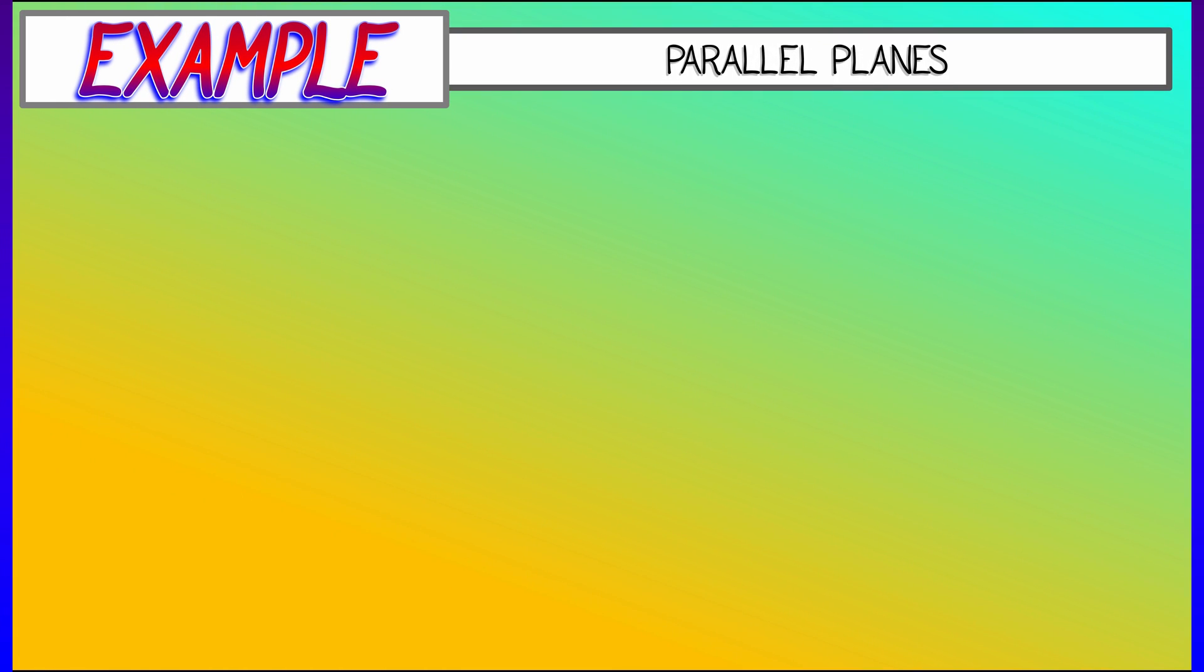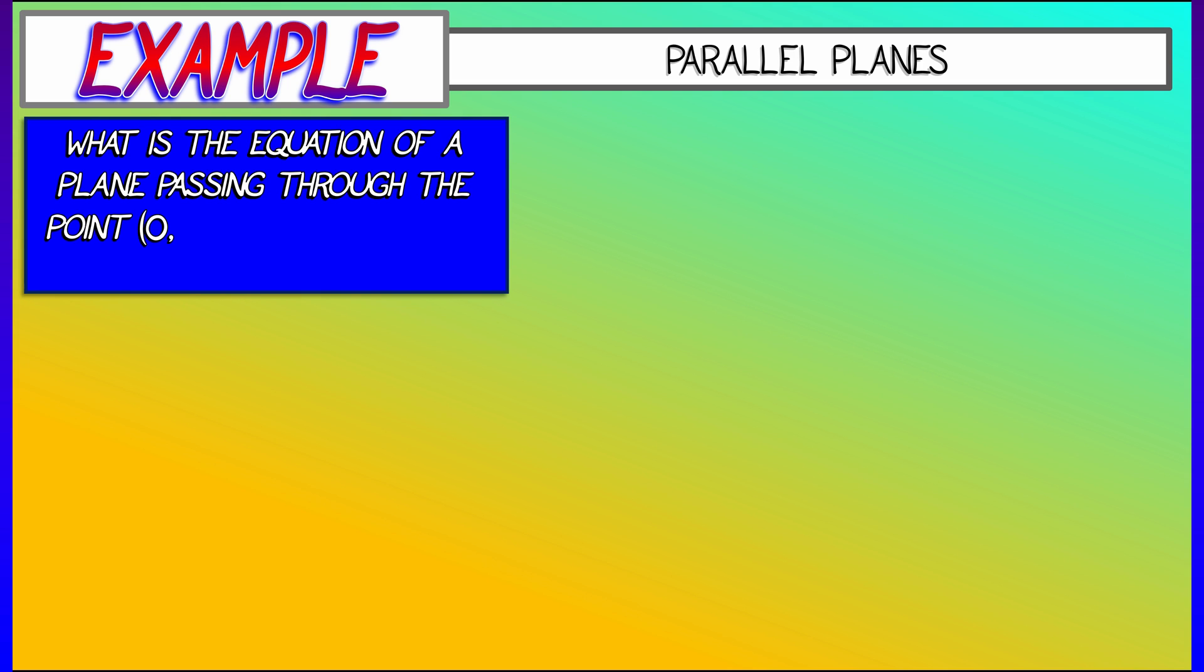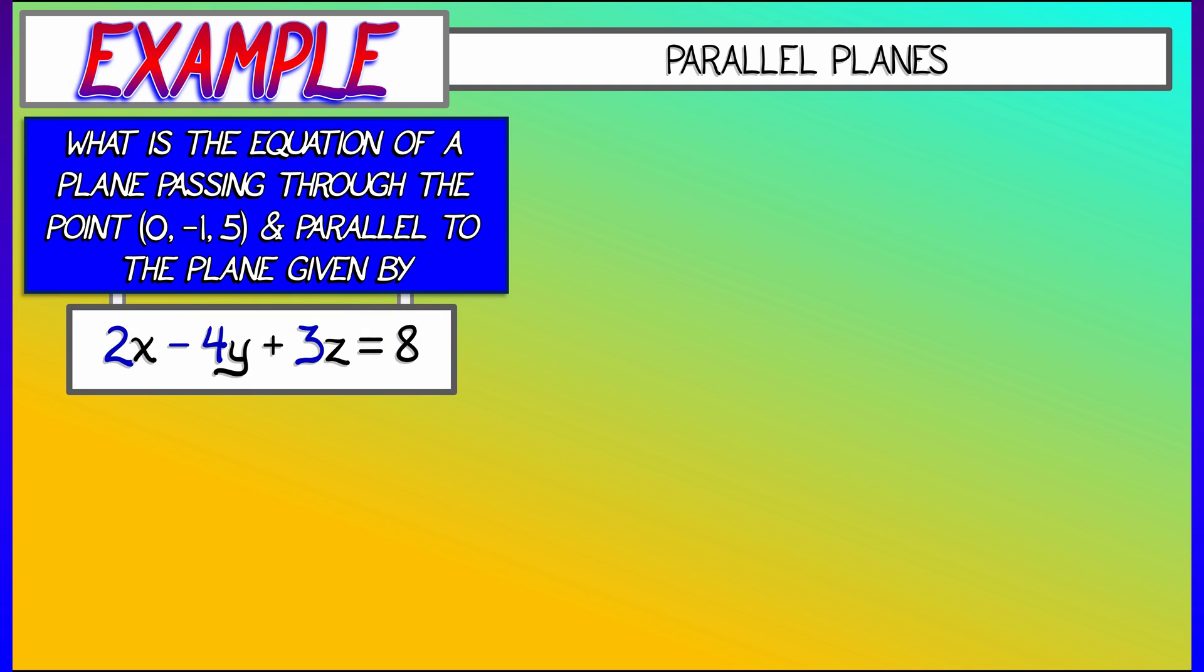Let's look at an example involving equations of planes and parallel planes. Let's say I give you a point (0, -1, 5) and I give you the equation of a plane, 2x minus 4y plus 3z equals 8. I want the equation of a parallel plane that passes through that point (0, -1, 5), which notice does not satisfy that equation given.